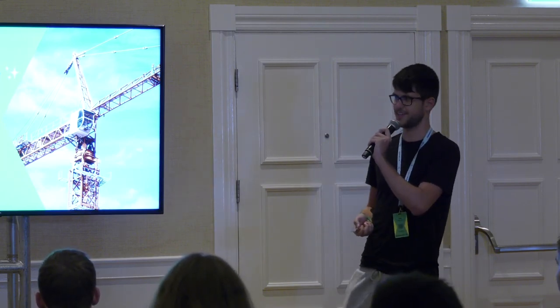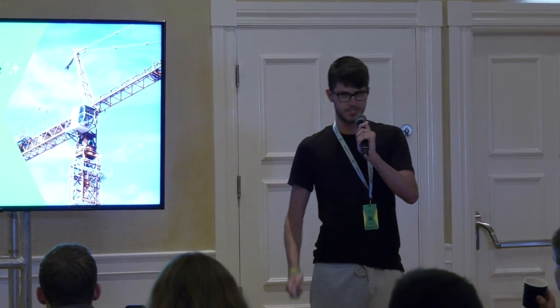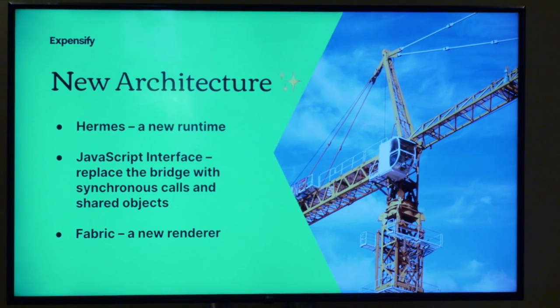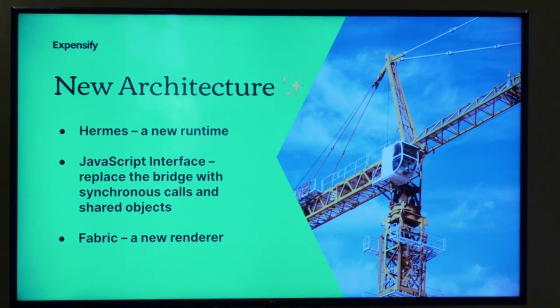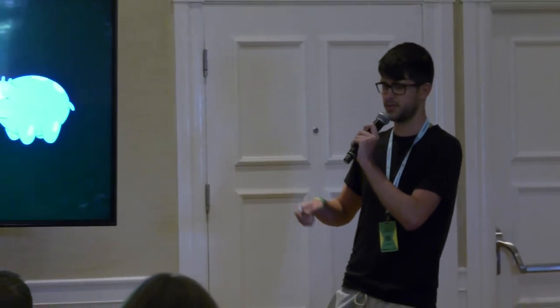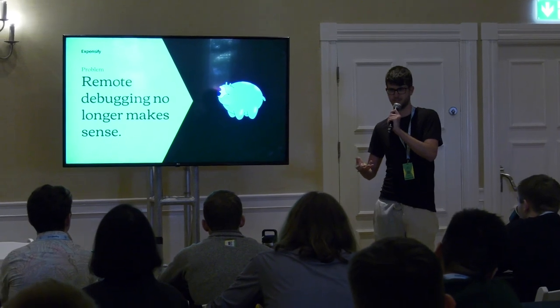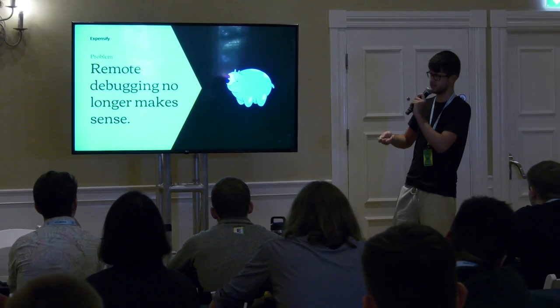The new architecture is arriving fast. It's composed of a few pieces — there's a new runtime called Hermes, a JavaScript Interface that replaces the bridge which is now fully synchronous using shared C++ host objects, and a new renderer. With the new architecture, remote debugging no longer makes sense: we want to debug the new runtime instead of Chrome's V8, there's no bridge to send things over WebSockets, and everything needs to be synchronous.